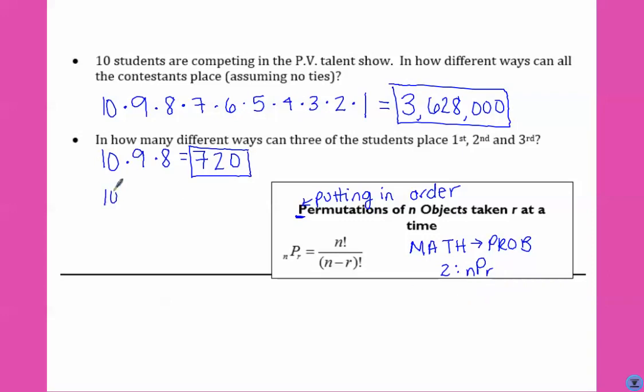So, like for this one, we have 10 places, we're putting them in order, and we're doing the first three places. This one would be 10, P, 10, because of the 10 things, we're putting all 10 in order.